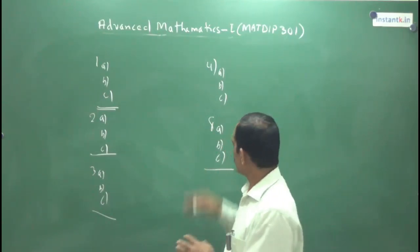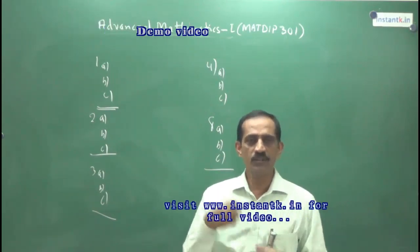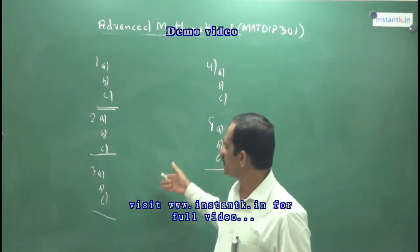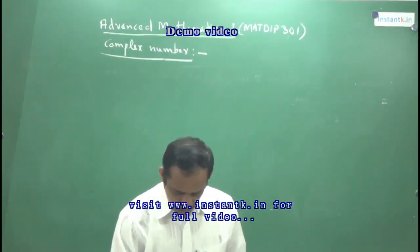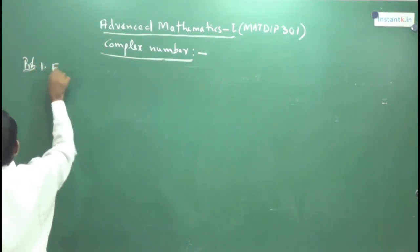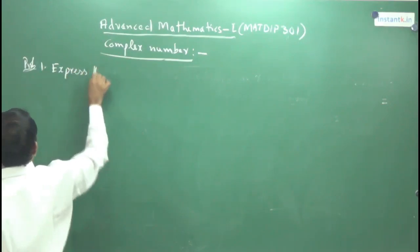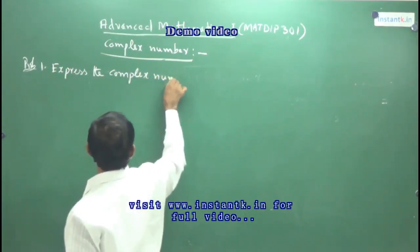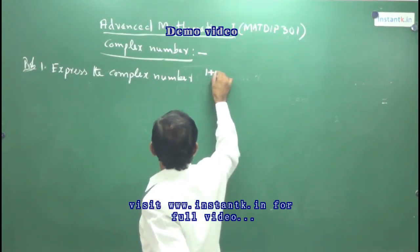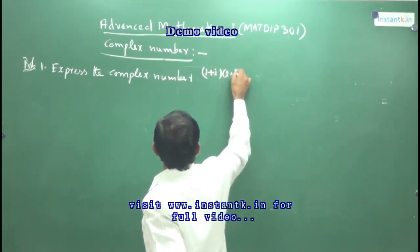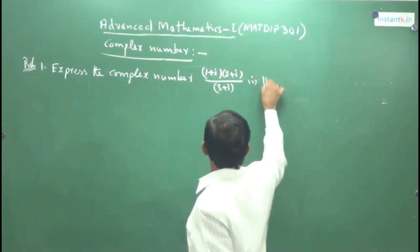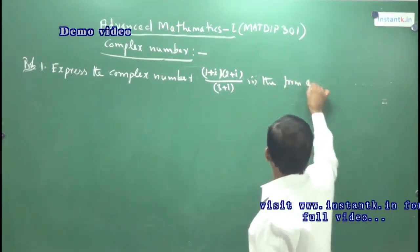This CD is prepared — go through it, and if any doubt is there, we can communicate and clear doubts through the network. So we go through the first topic. Here is a simple example they ask: Express the complex number 1 plus i into 2 plus i divided by 3 plus i in the form a plus ib.